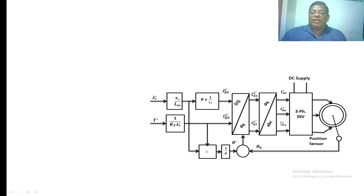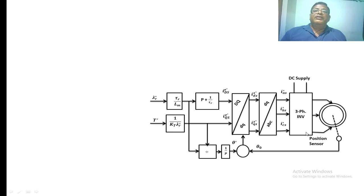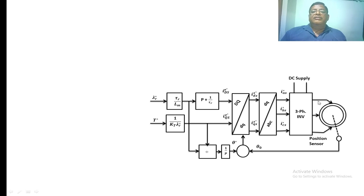The resulting values i_as_star, i_bs_star, and i_cs_star are compared with the actual currents taken by the induction motor. The current error is fed to a PI controller, which generates a reference voltage for the PWM technique. In PWM, the reference voltage is compared with a triangular carrier signal to generate pulses for the three-phase inverter, applying the required voltage to the induction motor to meet the required torque T_star. The three-phase inverter takes a DC source as input.